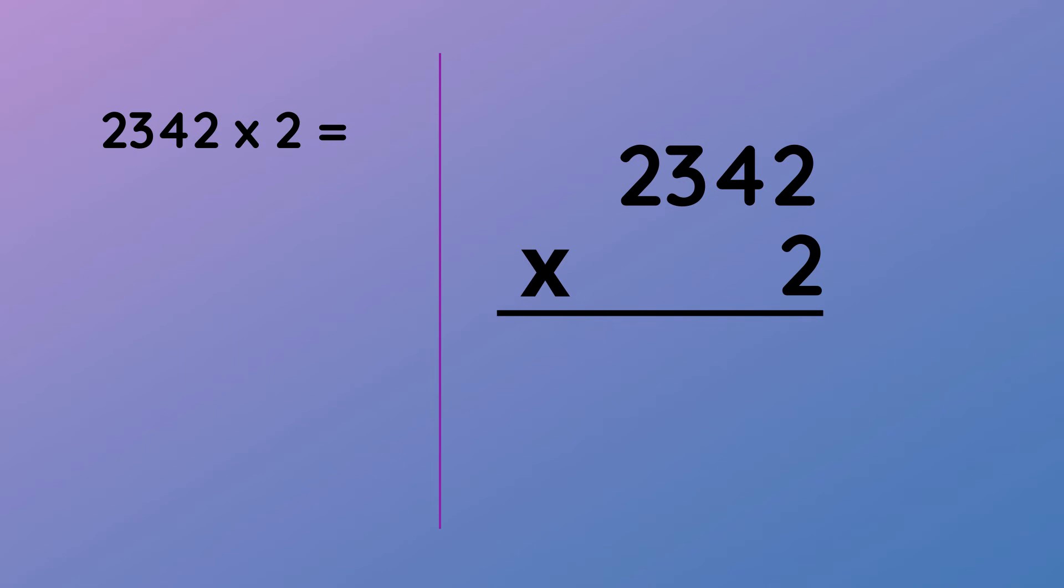It's question time. We have 2342 multiplied by 2. When multiplying in columns we start with multiplying our bottom number with our ones then tens then hundreds and so on. So first we do 2 multiplied by 2 equals 4. 4 goes in the answer space under the ones column.